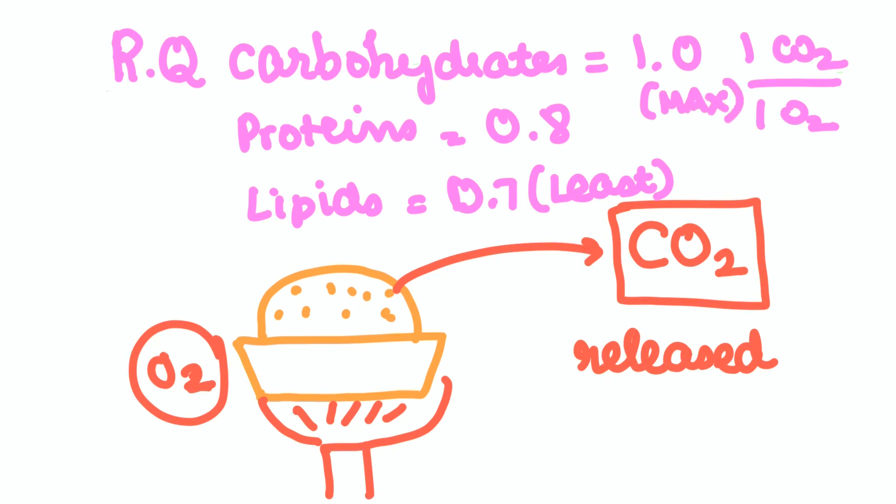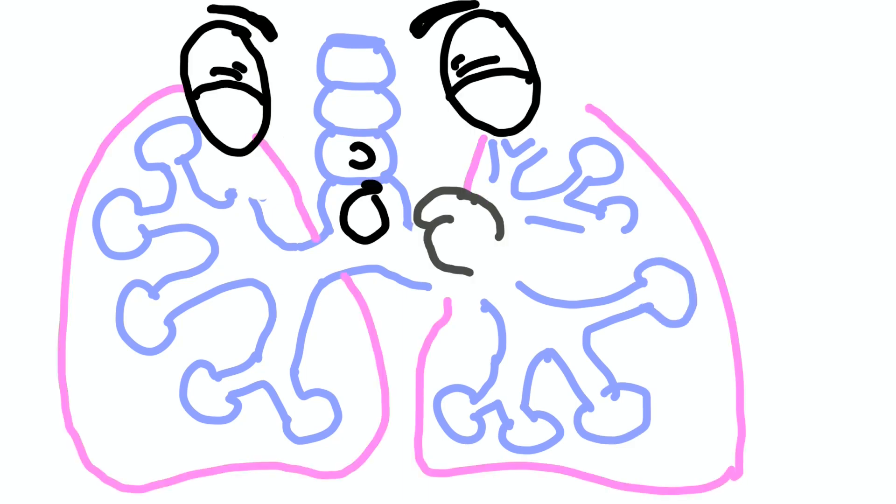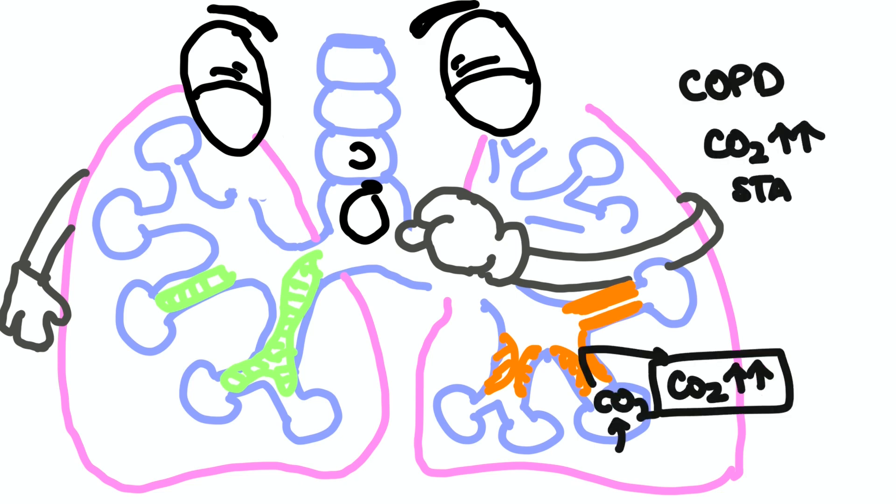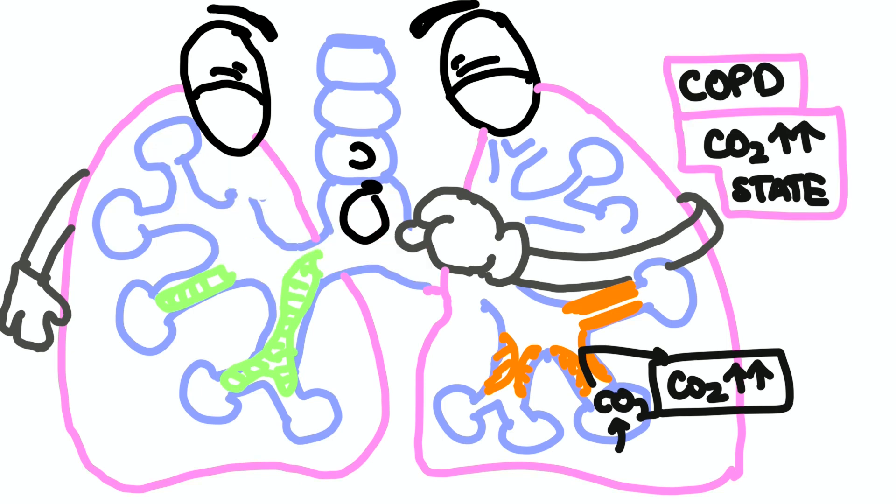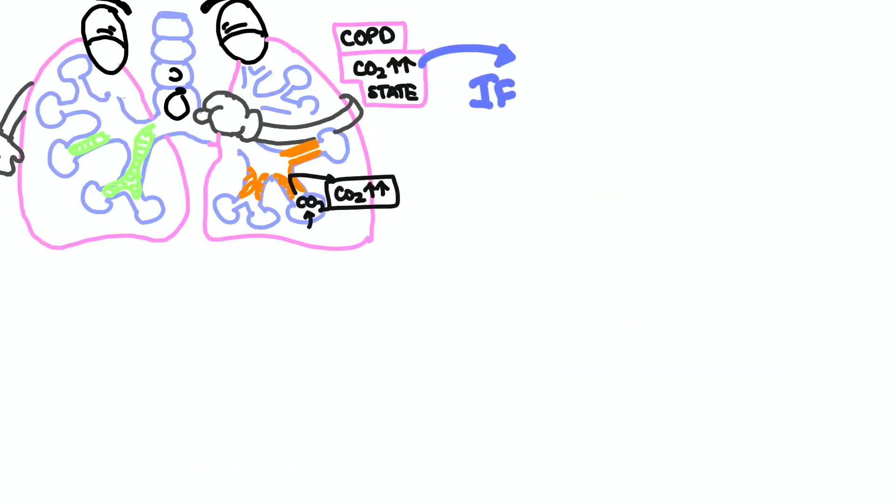In COPD, there will either be chronic inflammation and fibrosis of the bronchioles as in chronic bronchitis, or in asthma there might be bronchospasm. Ultimately, carbon dioxide cannot be exhaled properly, leading to some amount of carbon dioxide retention in these patients.